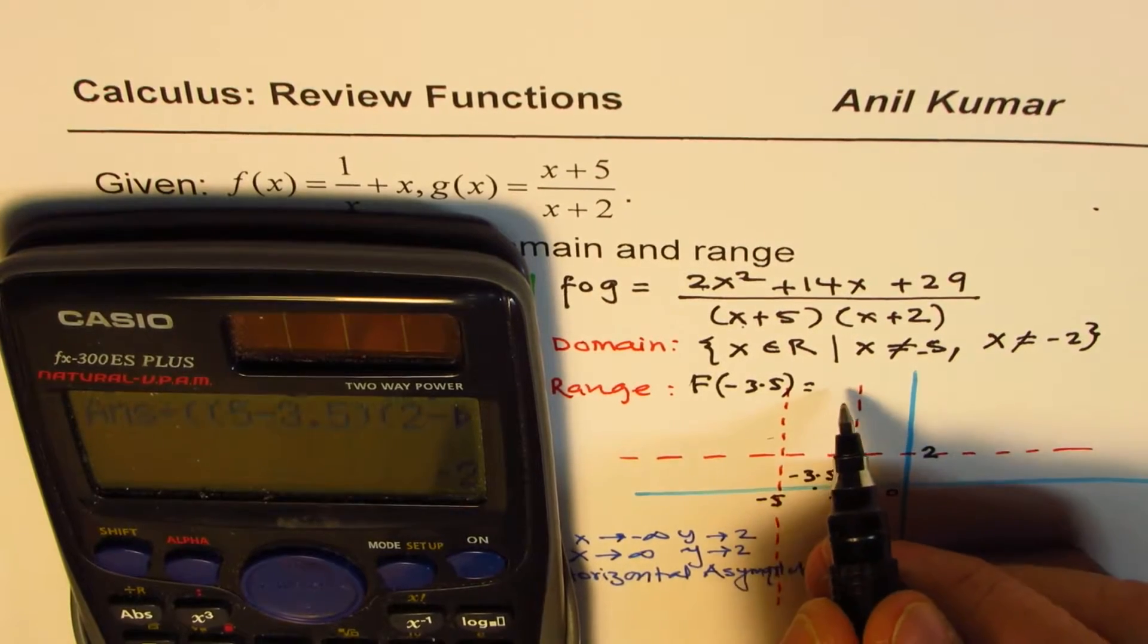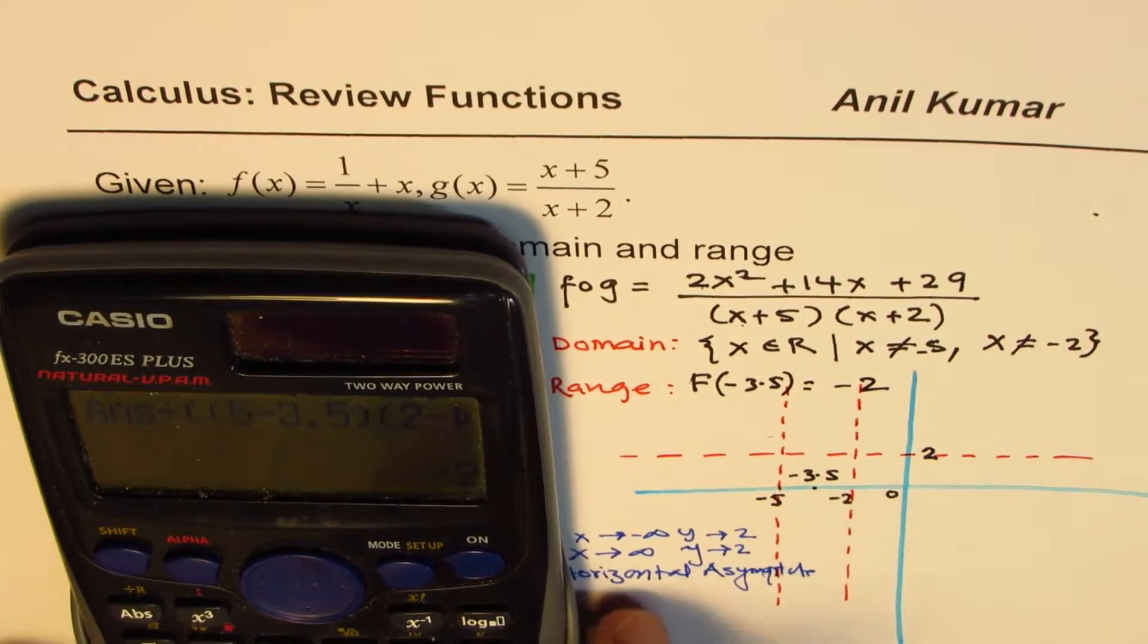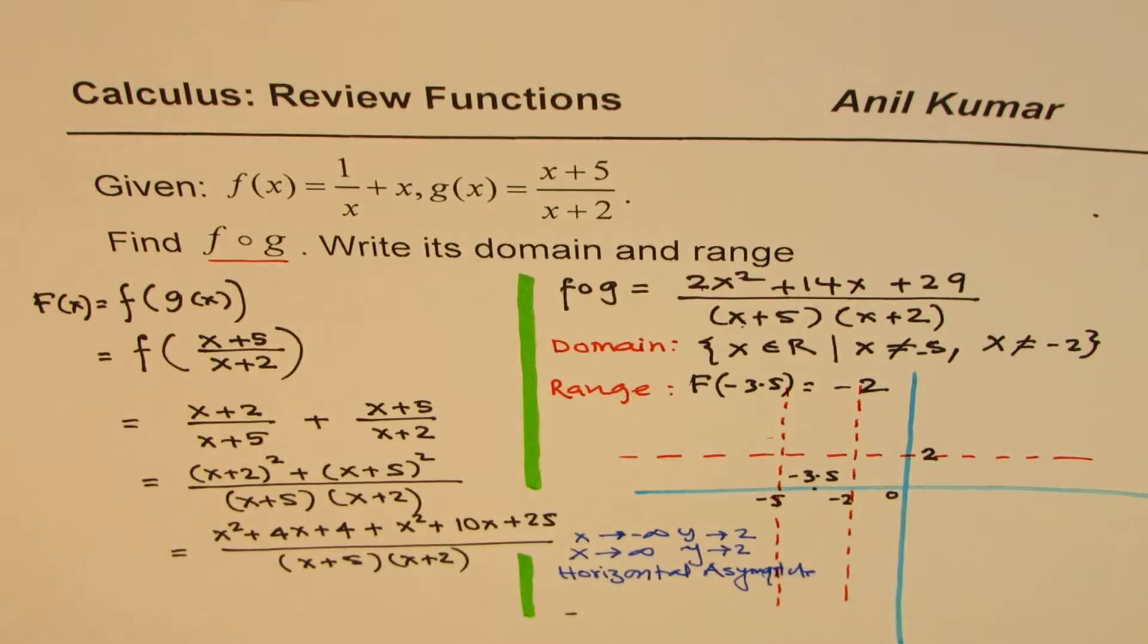And then we close these brackets and say equal to. So we get a value of minus 2. So we just calculated and found a value of minus 2.